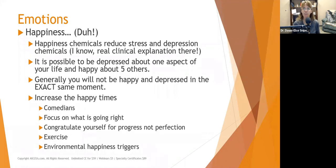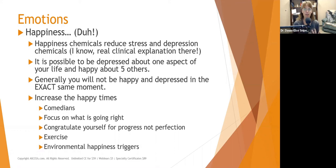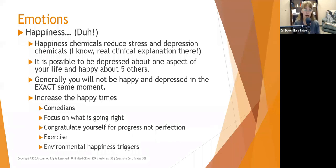Happiness chemicals reduce stress and depression. It's possible to be depressed about one aspect of your life but happy about five others — you can hate your job but love your kids and your gym. Generally you're not going to be happy and depressed at the exact same moment, so let's increase the happy times. Listen to comedians, focus on what's going right, congratulate yourself for progress not perfection, exercise — we know that releases positive neurochemicals — and put triggers for happiness in the environment: pictures that make you smile, sounds that are calming, smells that bring back positive memories.